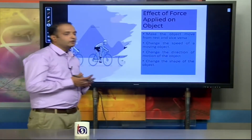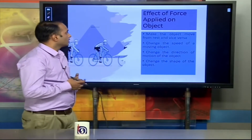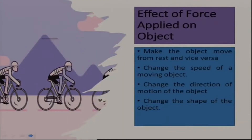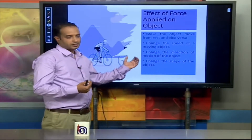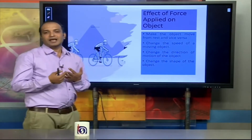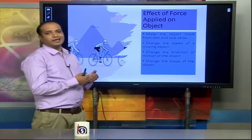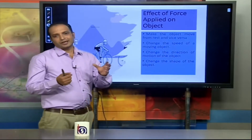The effect of force applied on an object: when a bicycle is in a rest position and a force is applied by paddling, its position changes and it moves. When we apply a brake, the cycle returns to a rest position. Rest and motion are supplementary to each other.